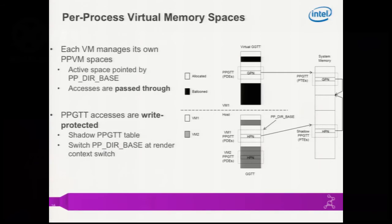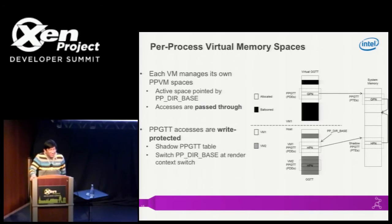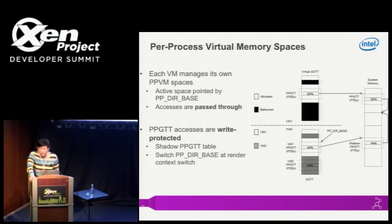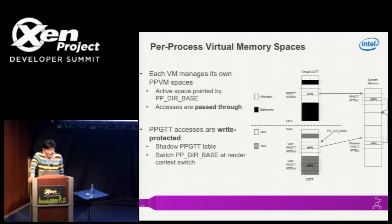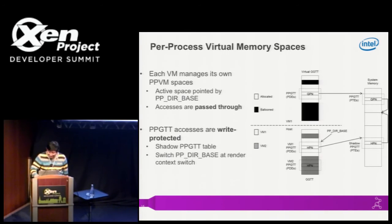For per-process virtual memory, the concept is quite similar to CPU page tables. You have the PPGTT directory name, which is similar to CR3. Then we have a two-level page table to do the translation. For virtualization of the PPGTT, we use the shadow page table technique.